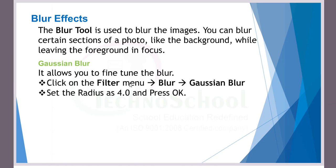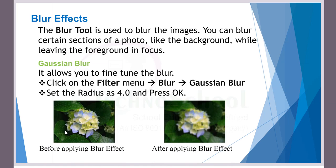The blur tool allows you to fine-tune the blur. To select it, click on the Filter menu in the menu bar, then go to Blur and choose Gaussian Blur. Set the radius to 4 and press OK. See the difference: before applying the blur effect the image looks sharp, and after applying the blur effect the image is visibly blurred compared to the original.